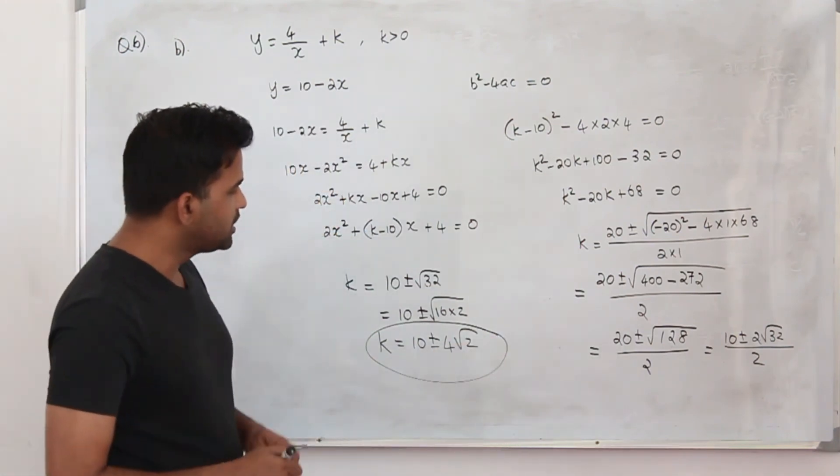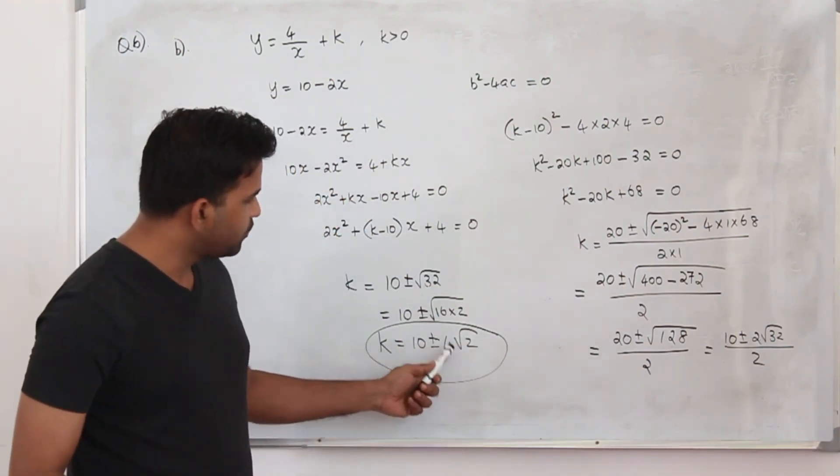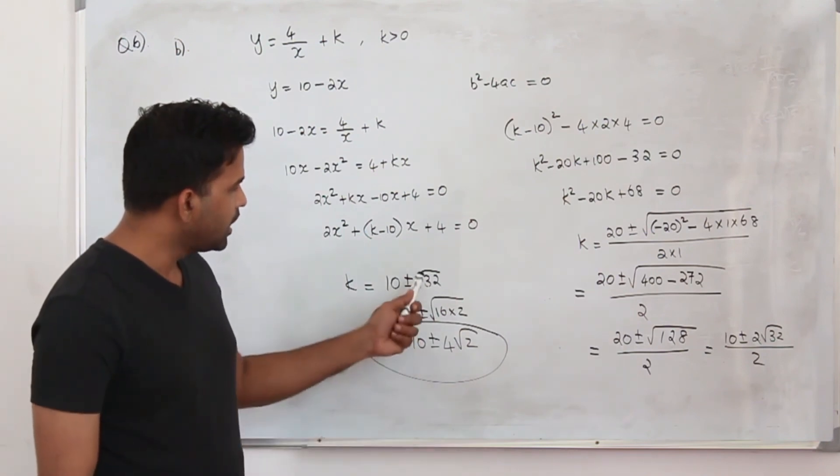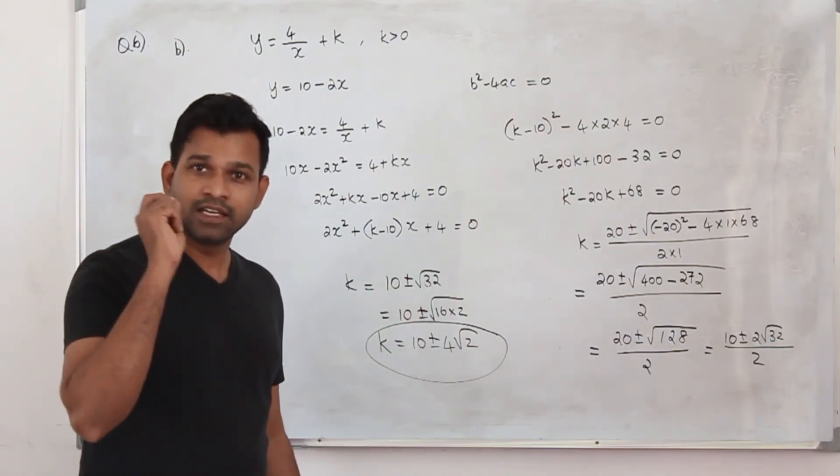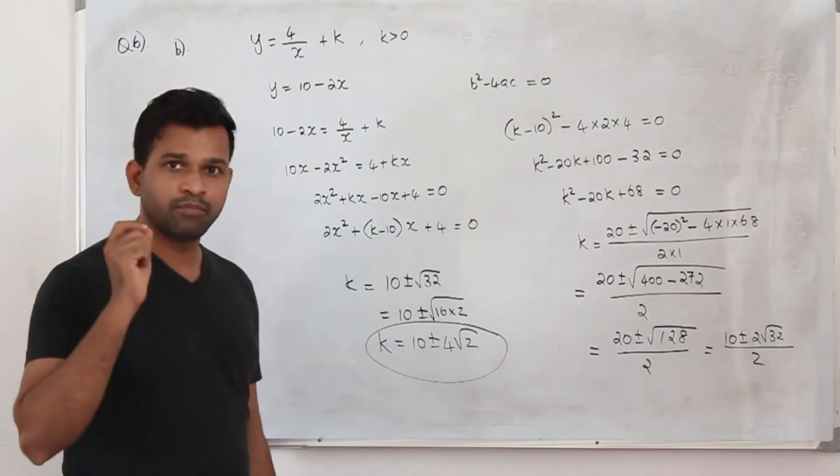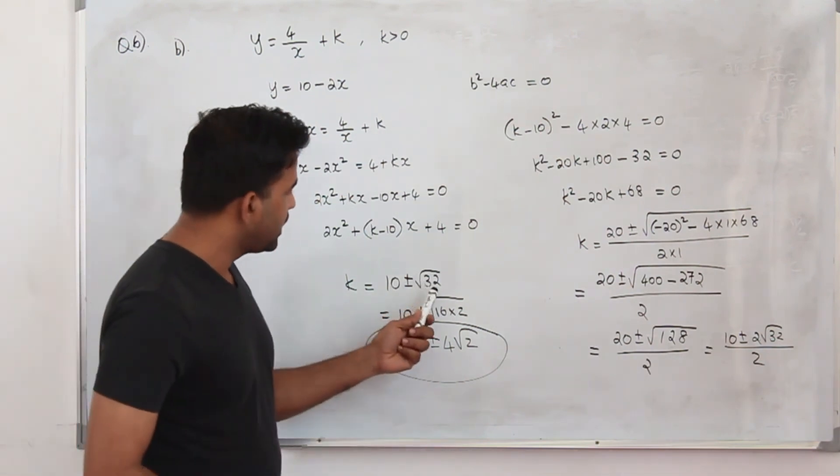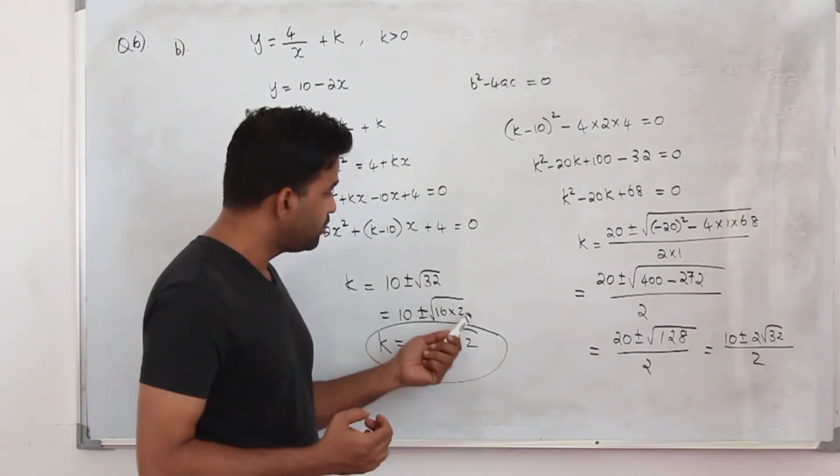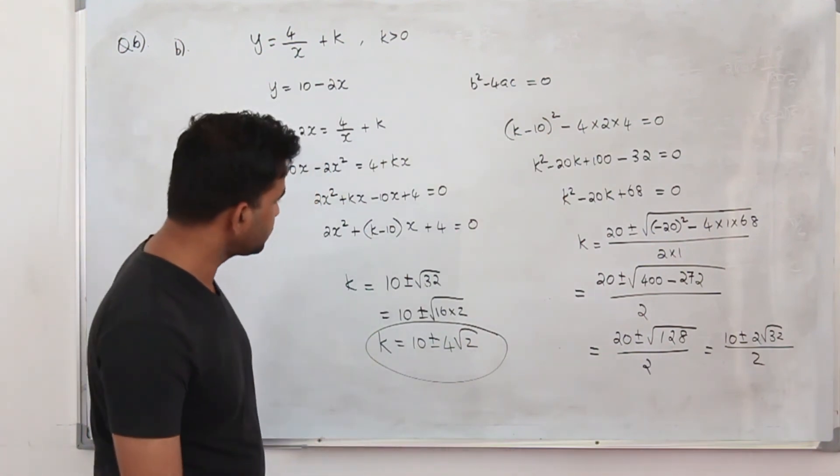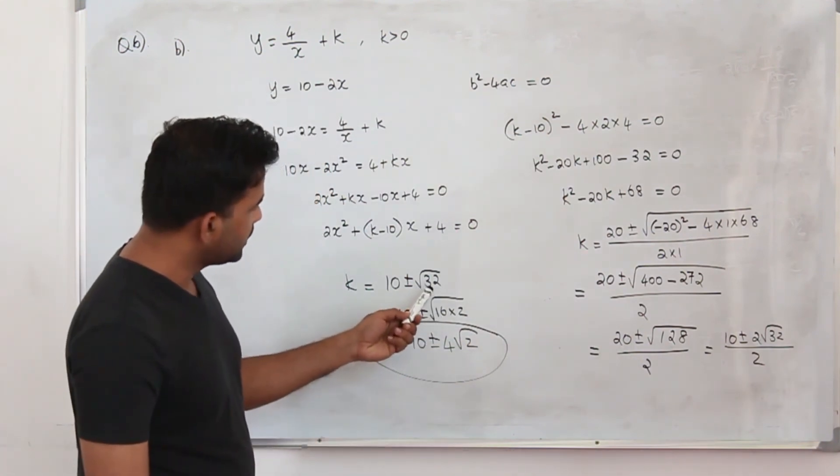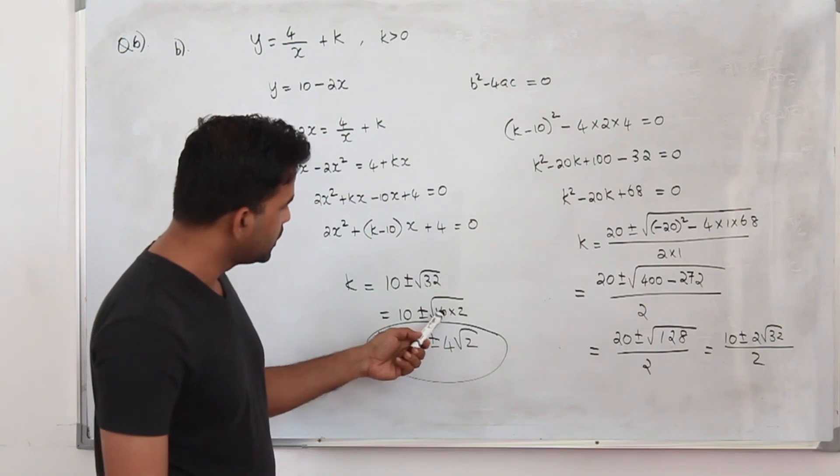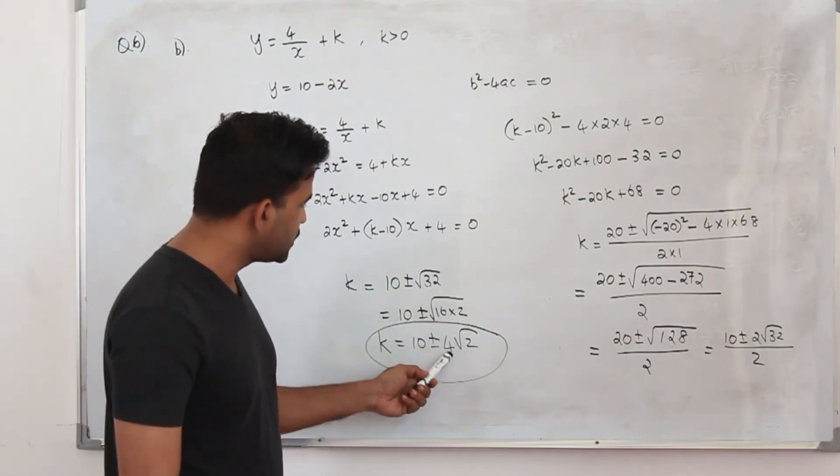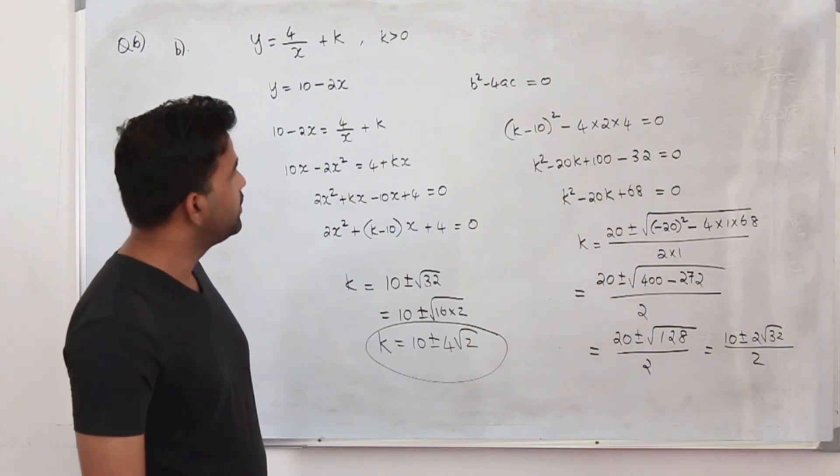So your k will take 2 values: 10 plus 4 root 2, 10 minus 4 root 2. You should have learned surds clearly in chapter 1. We have already learned how to simplify surds. So apply the method. Write it as 16 times 2. Square root of 16 times square root of 2. Square root of 16 is 4. So this is the value of k. That's it.